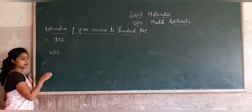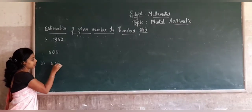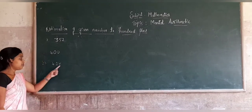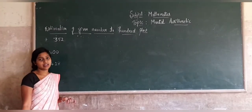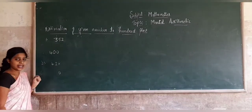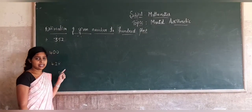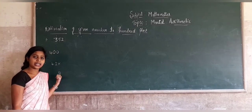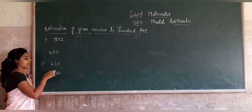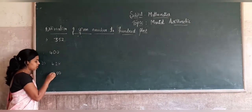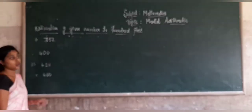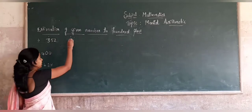Consider another example: 428. When estimating a given number to the hundreds place, if the unit place digit is greater than or less than 5, take that number as 0. We only consider the tens place. Here the tens digit is 2, which is less than 5. So take 2 as 0 and write the hundreds digit 4 as it is. Now write the rule for estimating a given number to the hundreds place.